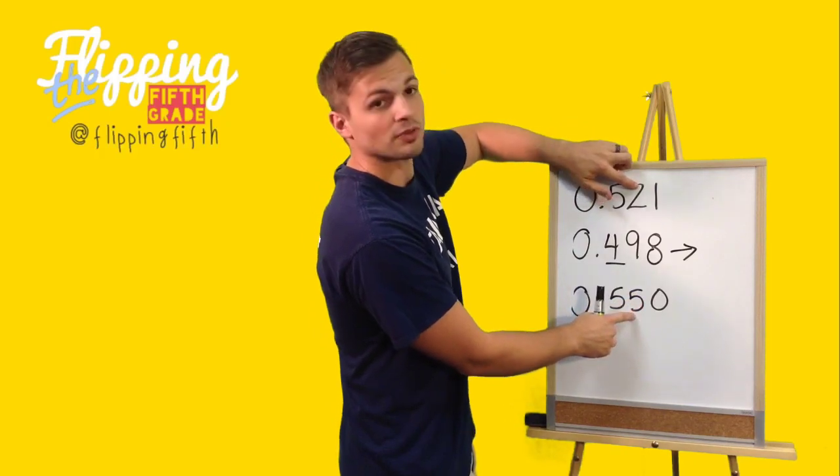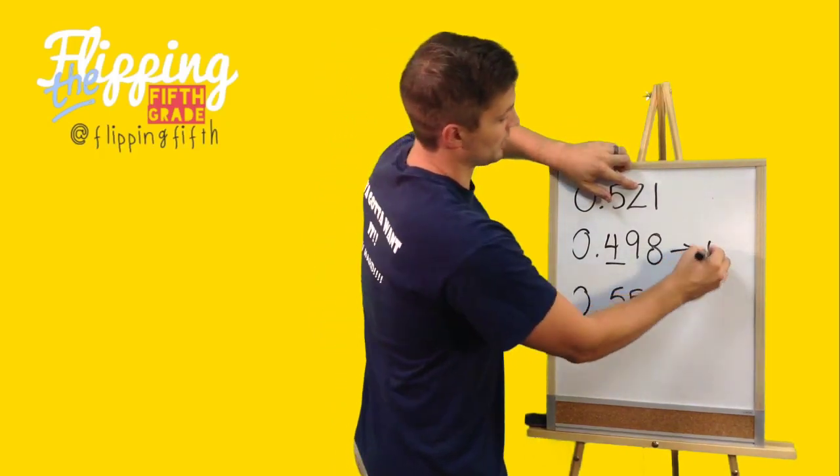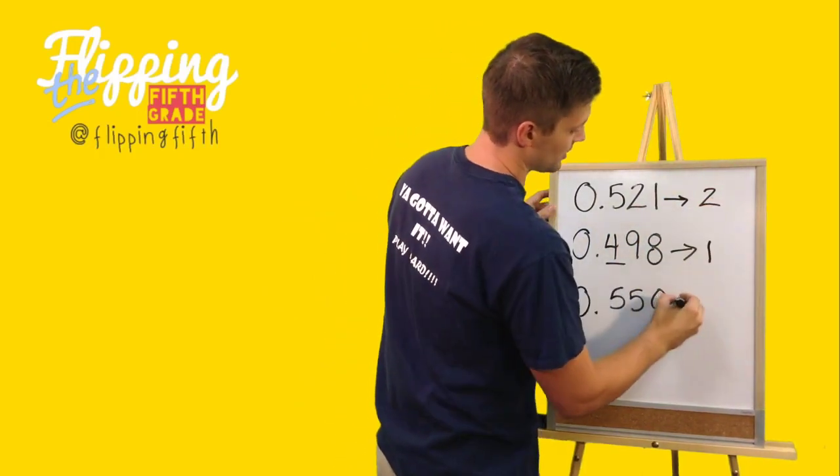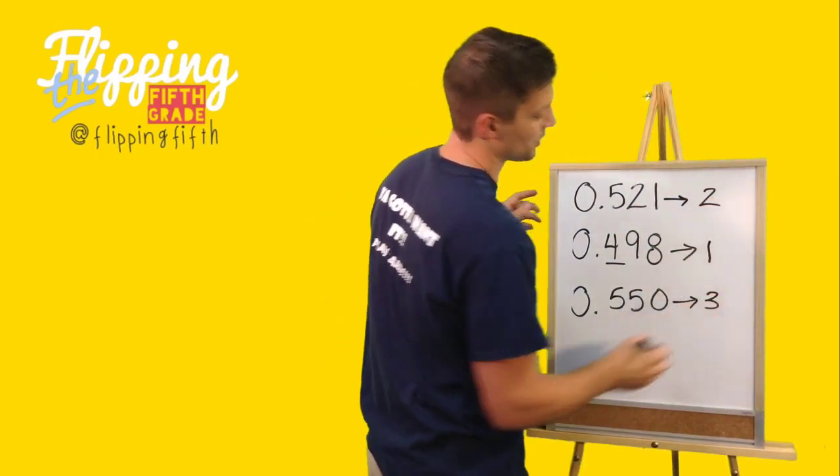We have a two and a five. We know that the two is less than the five. Therefore, this one will go second. And finally, this one will go third.